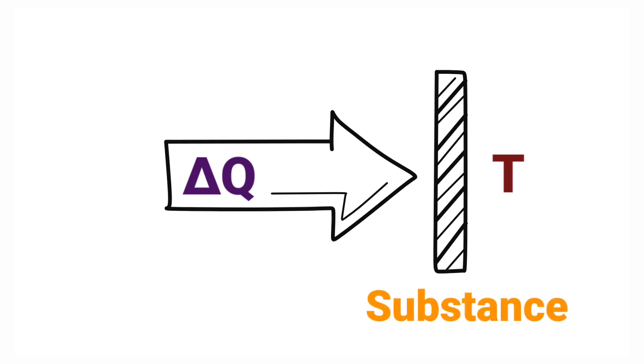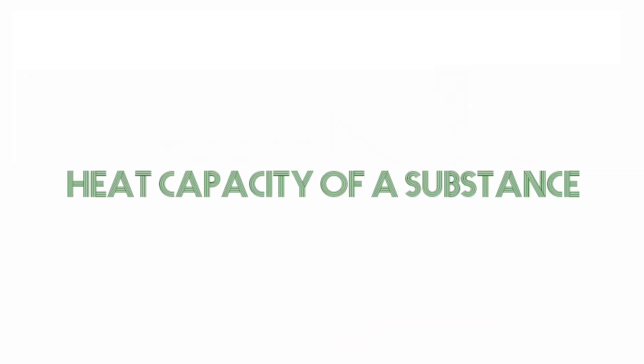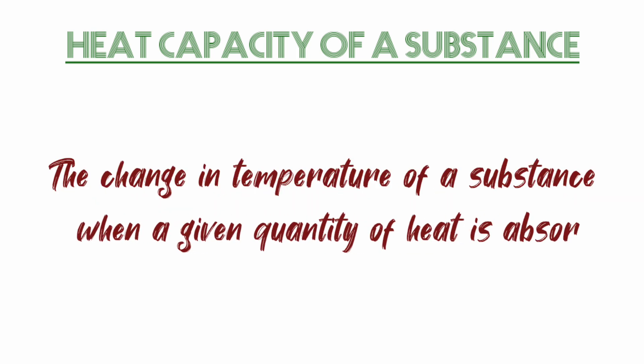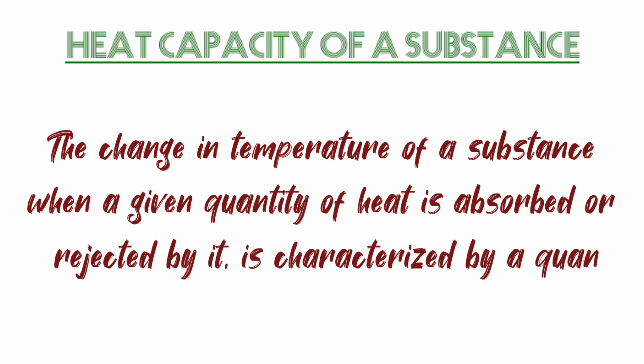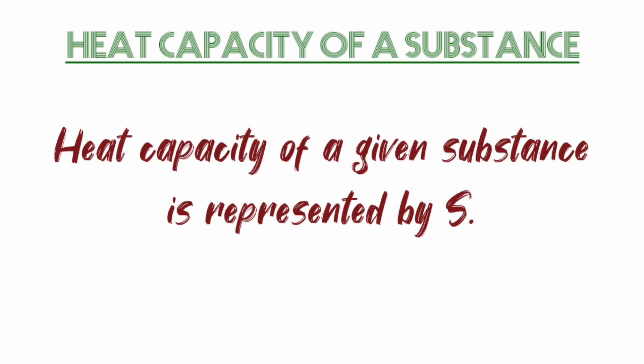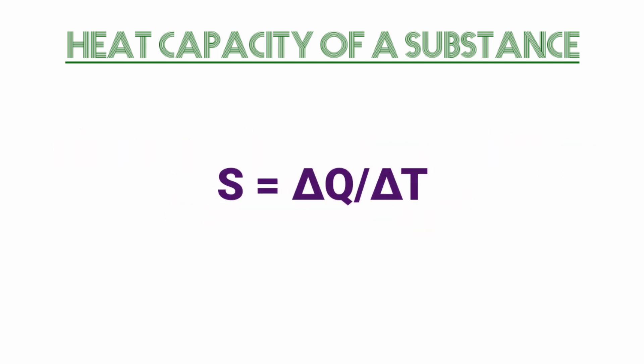This changes its temperature from T to T + ΔT. We define heat capacity of a substance as the change in temperature when a given quantity of heat is absorbed or rejected by it. This is characterized by a quantity called heat capacity. We define heat capacity of a substance as S = ΔQ/ΔT. Heat capacity S is proportional to the mass of the substance and also depends on the temperature.